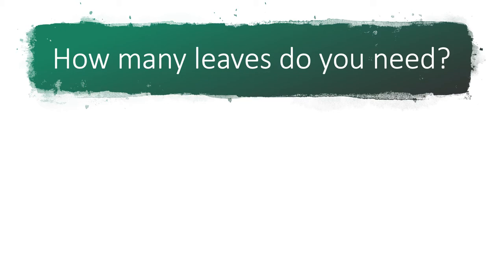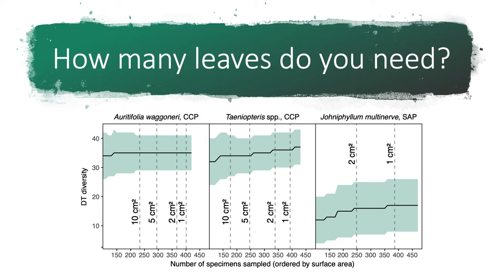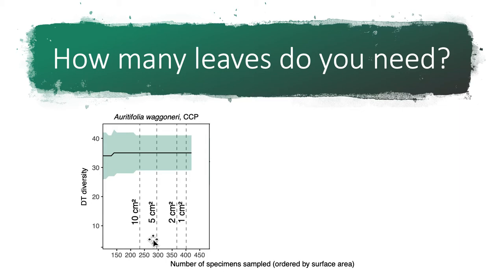Getting to that first question — how many leaves do you need? Looking at three plots, each panel represents a different fossil plant species. Along the x-axis is the number of specimens sampled, ordered by surface area since many fossils are fragmentary. Along the y-axis is the damage type diversity. For the first species, when we looked at fewer than 250 specimens, we already had as much damage type diversity as we'd see examining every single fossil from that locality. The width of the confidence intervals shown in light green does not change as we go from fewer than 250 specimens to over 400.